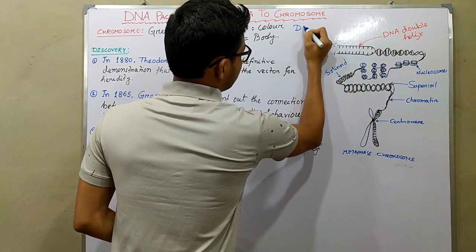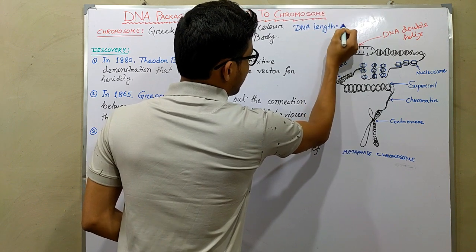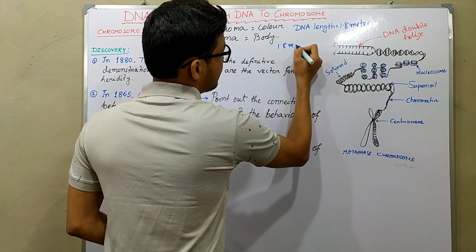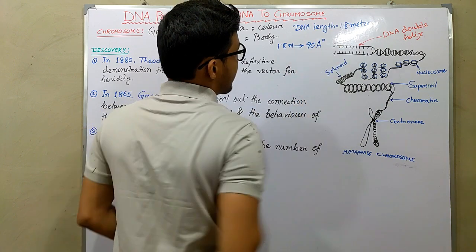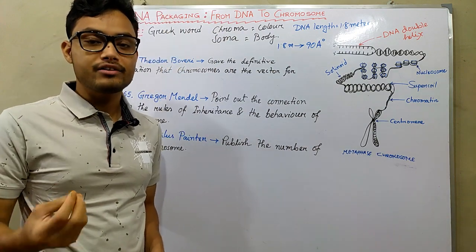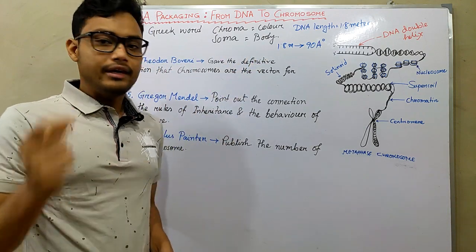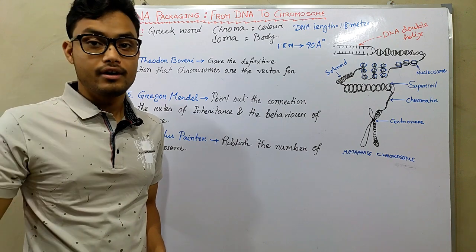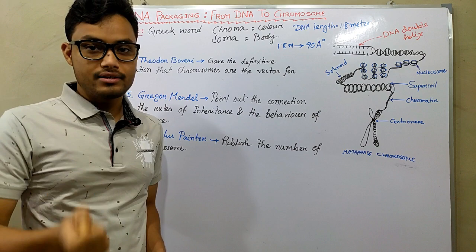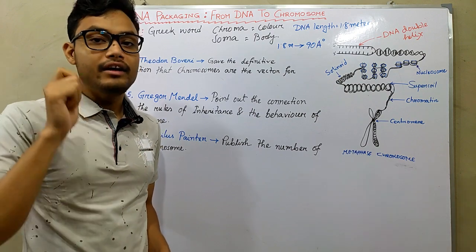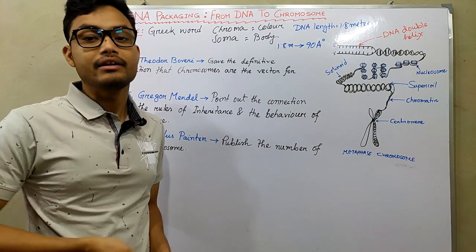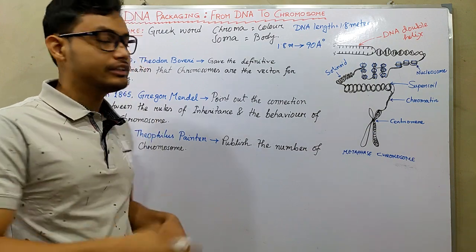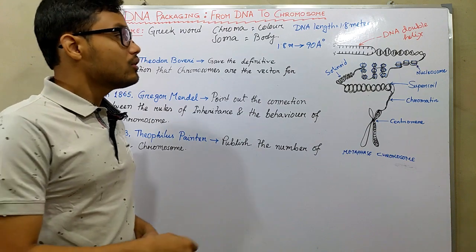Our DNA length is 1.8 meters and that DNA is packed into 90 angstroms of area. To give an example: the tip of a ball pen can accommodate 10,000 cells and 10,000 nuclei. In that tiny space we have 10,000 nuclei, and if each nucleus contains 46 chromosomes, that tiny place contains 460,000 chromosomes.